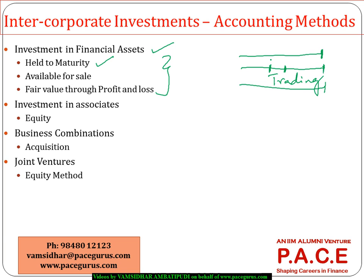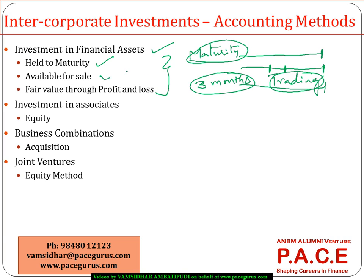Fair value through profit and loss investments are ones I may sell in the near future — held purely for trading. I am investing just to make a short-term profit and may sell them within three months. Those are classified as fair value through profit and loss. Anything which does not fall into the held-to-maturity or trading category can be put under available for sale. Whenever I am talking about investment in financial assets, it must go into one of these three categories.